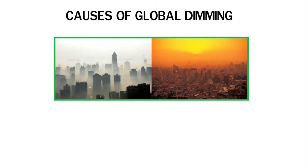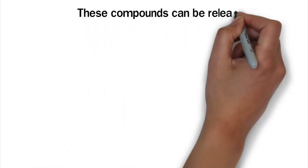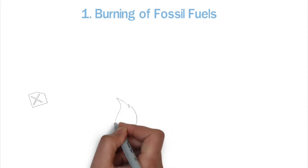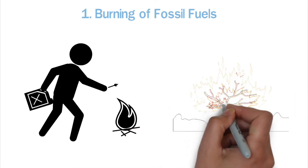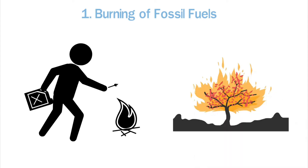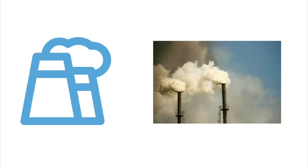Causes of global dimming. Global dimming happens when there are too many particles in the air. Tiny liquid droplets or solid particles called aerosols are the main cause for concern. They are also called atmospheric particulates. These compounds can be released into the air by natural or man-made processes. First, the burning of fossil fuels. Harmful compounds form when fossil fuels like coal and oil are burned. Carbon dioxide is the main danger. However, other particles are also made during the process of burning something, like wood or paper. Sulfur dioxide, ash, soot, and other things pollute the air. It is easy for these airborne aerosols to get into the upper atmosphere.